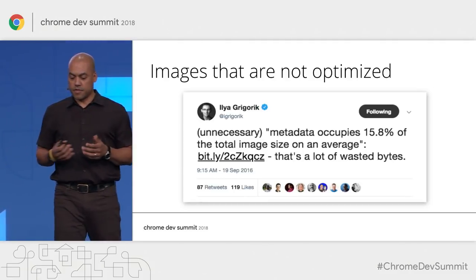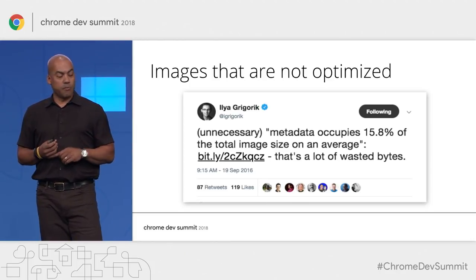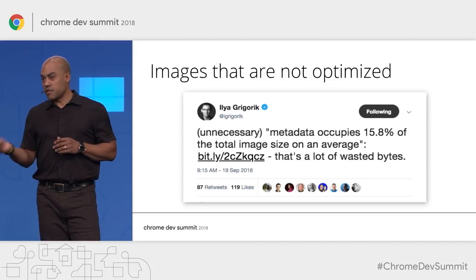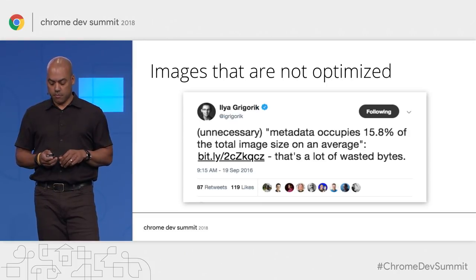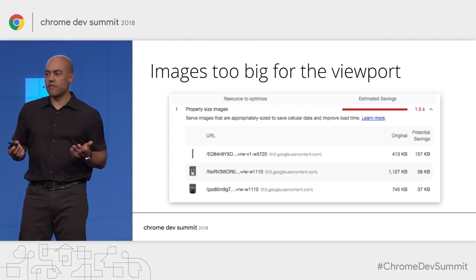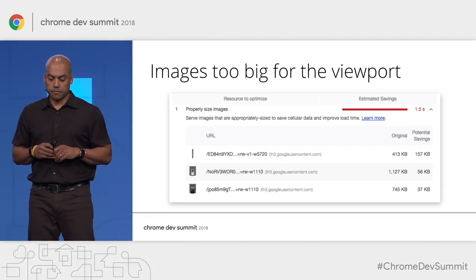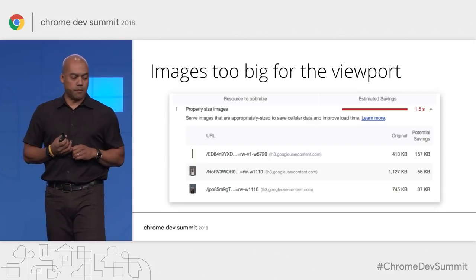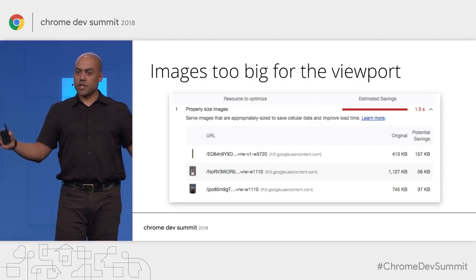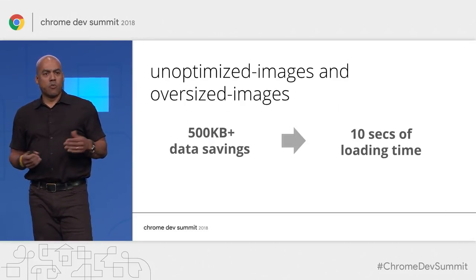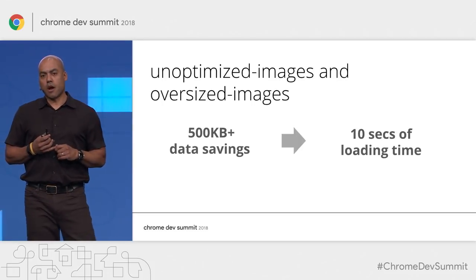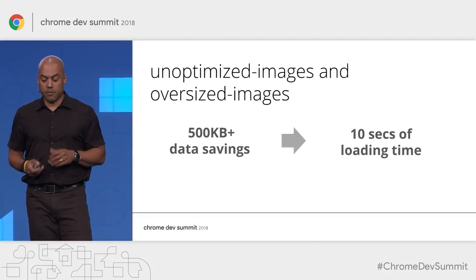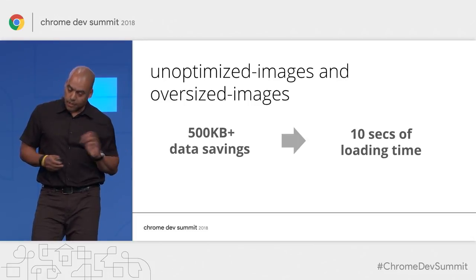Images often have extra quality or metadata that take up space but isn't required. There are many tools to optimize images, but we have to remember to use them or integrate them into a build pipeline. Ideally, your page should never serve images larger than the version rendered on screen — anything larger just results in wasted bytes and slows down page load time. A common example might be sending a desktop-sized hero image to a mobile device. We've designed policies to catch common mistakes of unoptimized or oversized images. Our analysis of the 10,000 most popular sites shows that 10% of sites can save over 500 kilobytes on average, which can reduce load time by up to 10 seconds on a 3G network.